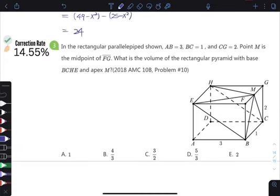So first of all, half of the volume of this cuboid. And then minus, let's say, two times the volume of the pyramid, let's say, EFMB.